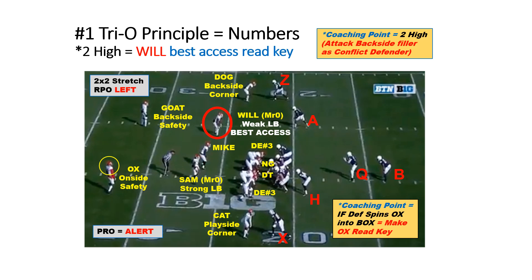Here's an example of the numbers principle right away. We're going to run a stretch zone to the left towards the bottom where the H-back is. We've got two high safeties, which means there are seven potential run box defenders. We've got six to block six, so we're going to go and read the Will backer or the backside linebacker as our best access, because that's the seventh conflict defender.